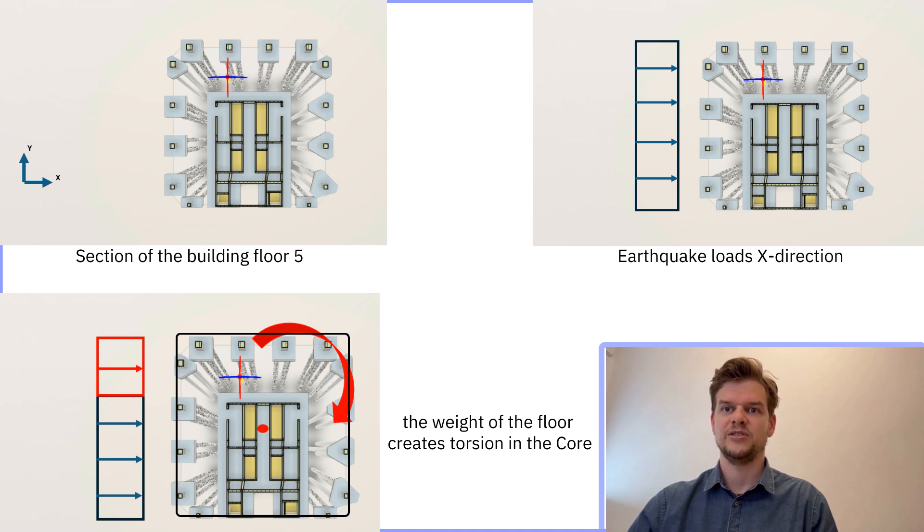In the images you can see sections of the building. The top right shows earthquake forces in the x-direction. The core takes the load first, but the floors, connected to the core, move slightly later like a swinging mass. Because the core isn't centered or doesn't run the full width, the whole structure starts to twist. That's torsion.